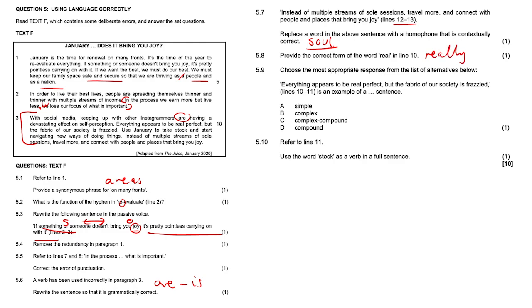Choose the most appropriate response from the list of alternatives below. Everything appears to be real perfect, but the fabric of our society is frazzled. Coming from lines 10 to 11. That's an example of a what? Everything appears to be real perfect. That can stand alone. The fabric of our society is frazzled. These are two complete thoughts. These sentences can stand alone.